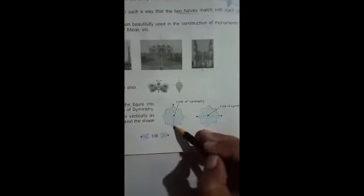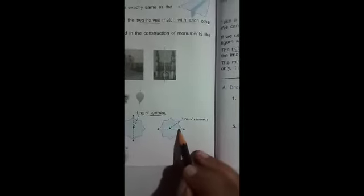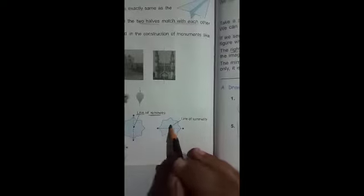See here another example. This figure here, this line divides the figure into two equal halves. So the line which divides the figure into two equal halves, that line is known as line of symmetry. Here you can see this horizontal line. It divides the figure into two equal halves. So this line is known as line of symmetry.